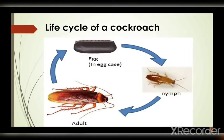Life cycle of a cockroach. How do insects reproduce? By laying eggs. The eggs undergo various stages of development before transforming into an adult insect, so insects undergo metamorphosis. The life cycle of a cockroach goes: egg, nymph, and then adult.